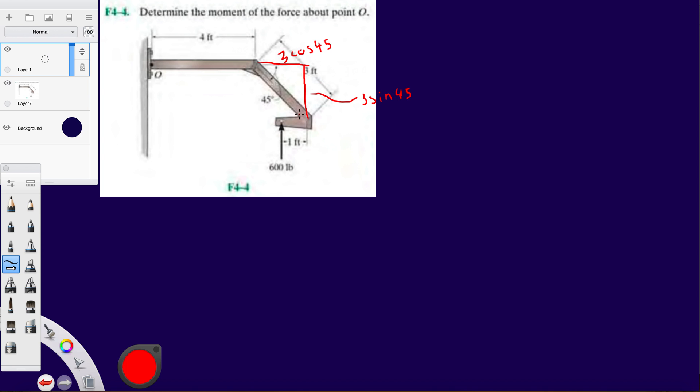So now what distance do I have to move the line of action of a force of 600 so it intersects with point O? Well it's gonna be this 4 feet plus this little bit.